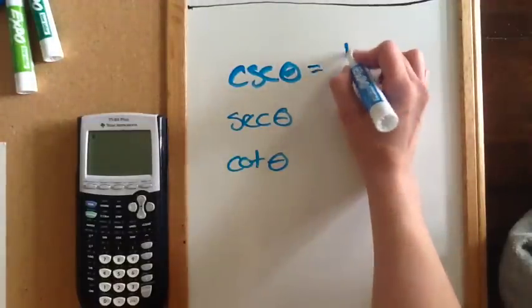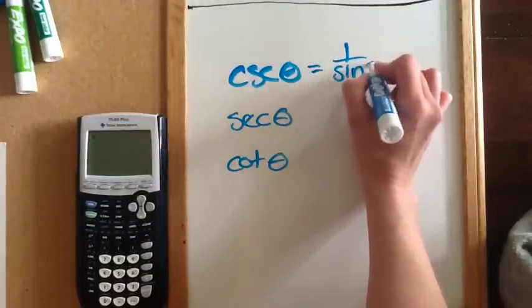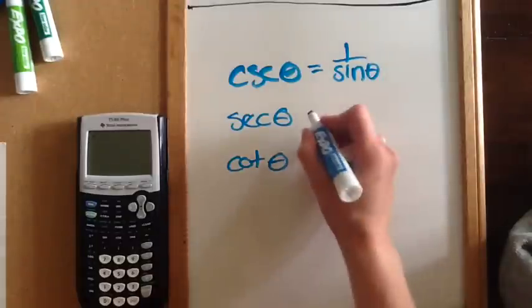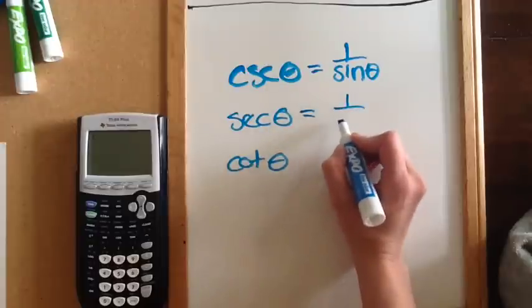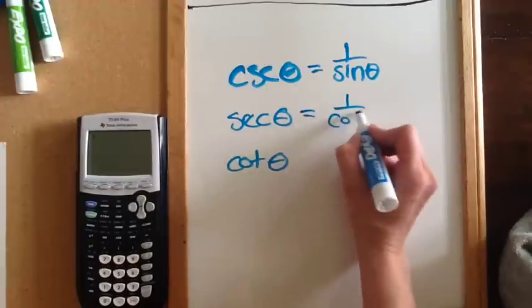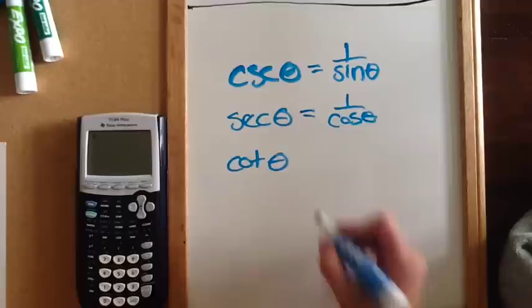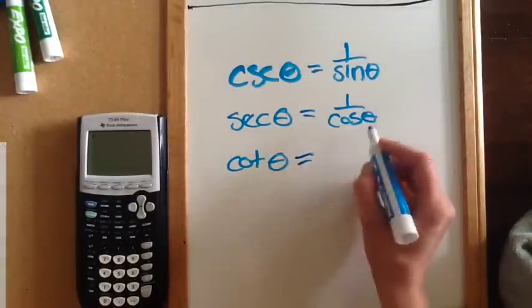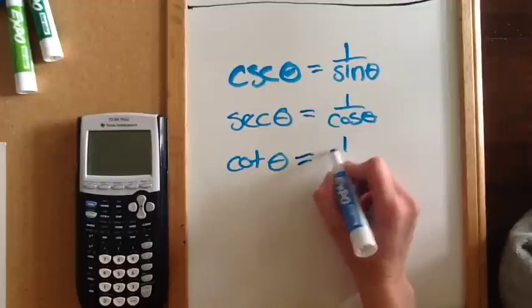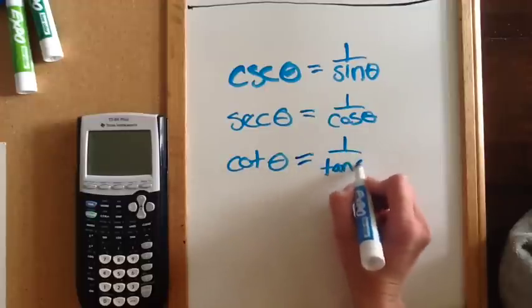Cosecant is the same thing as 1 over sine. Sine and cosecant are reciprocals of each other. Secant is the same thing as 1 over the cosine of theta. Secant and cosine are reciprocals of each other. And then cotangent is 1 over the tangent of theta.